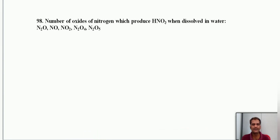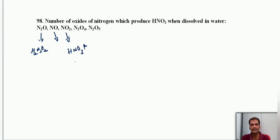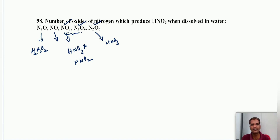The number of oxides of nitrogen that produce HNO3 when dissolved in water: N2O gives hyponitrous acid (not HNO3); N2O3 is a mixed anhydride giving HNO3 and HNO2; N2O4 similarly gives HNO3 and HNO2; N2O5 gives exclusively HNO3. So NO2, N2O4, and N2O5 can produce HNO3. Total: 3 oxides.